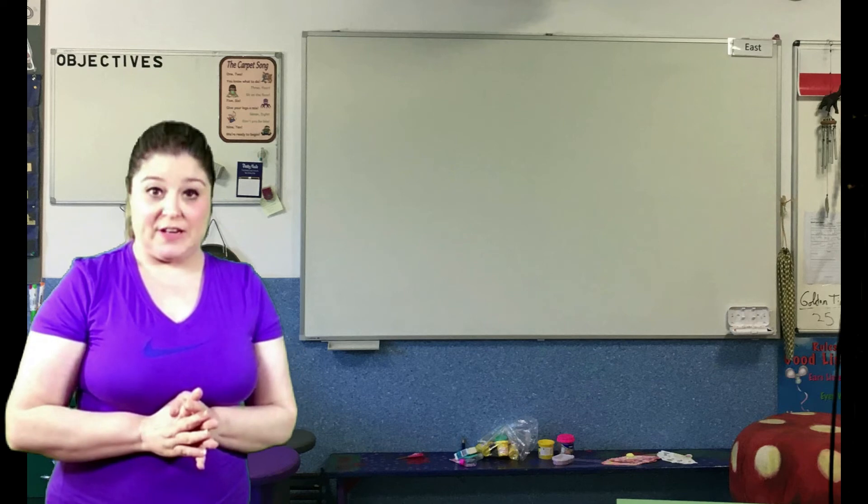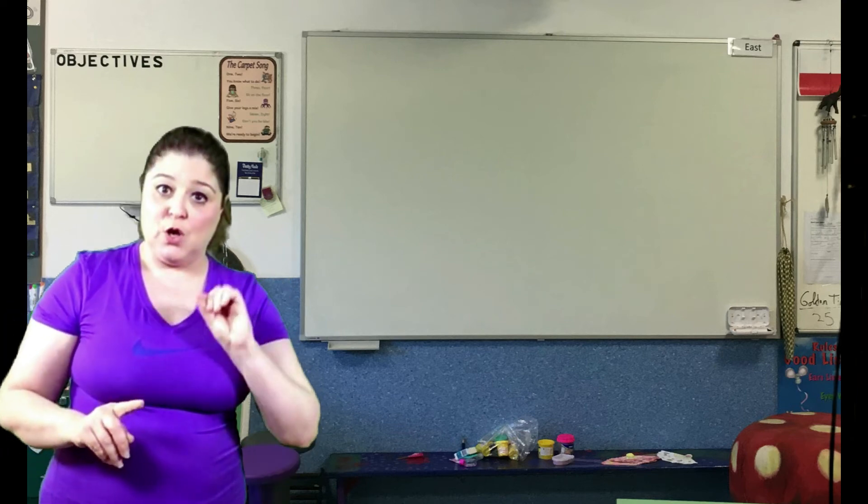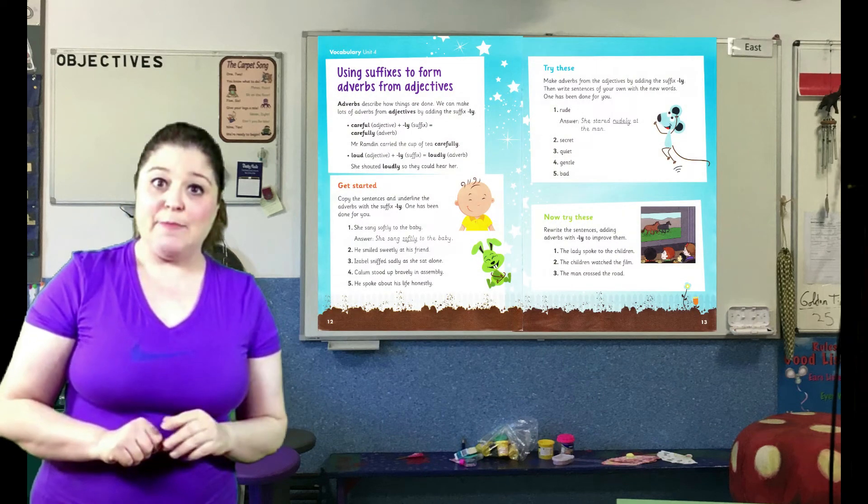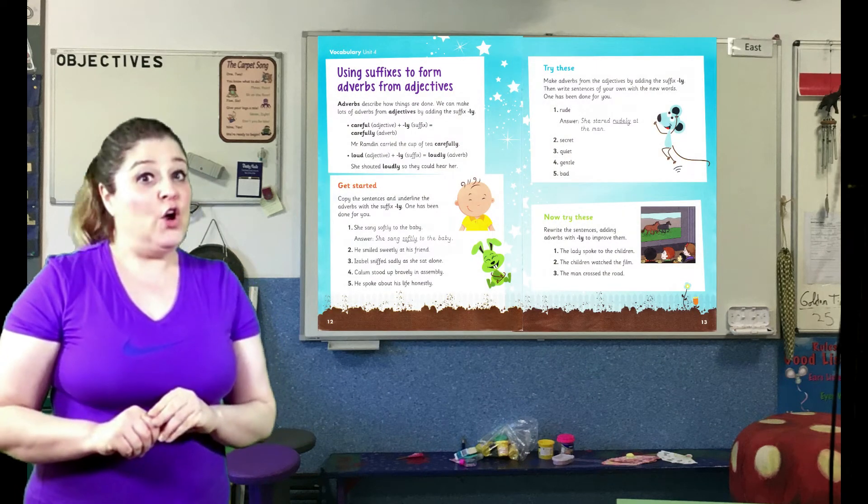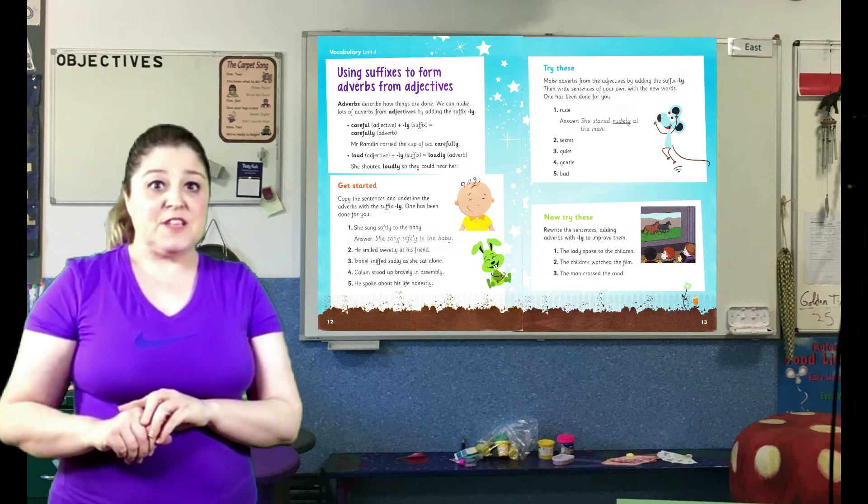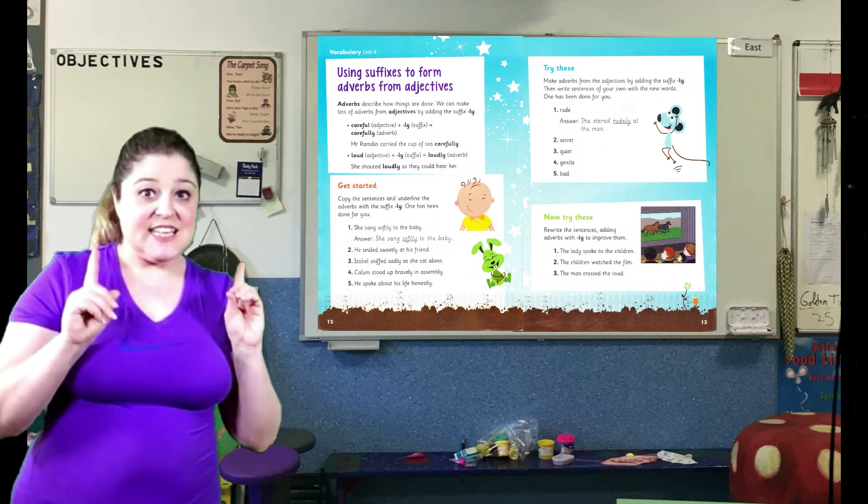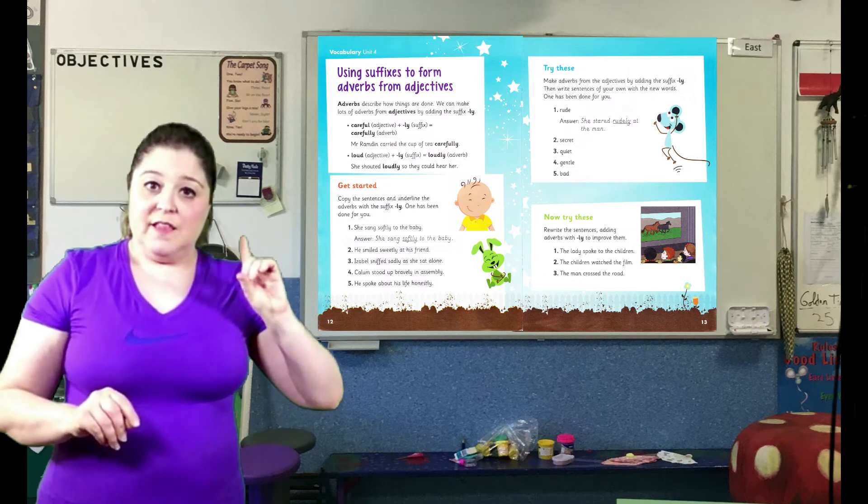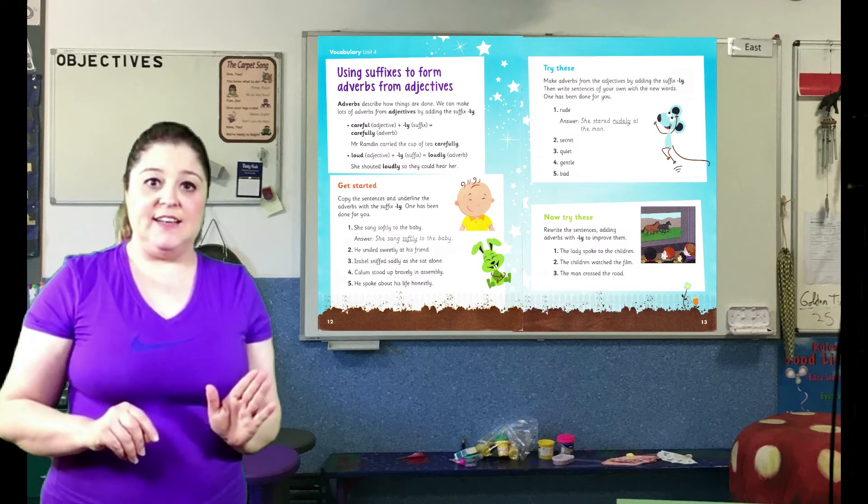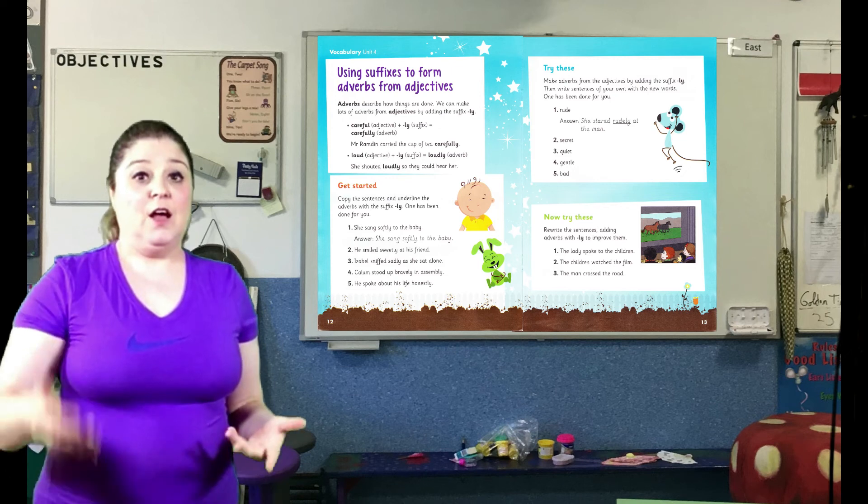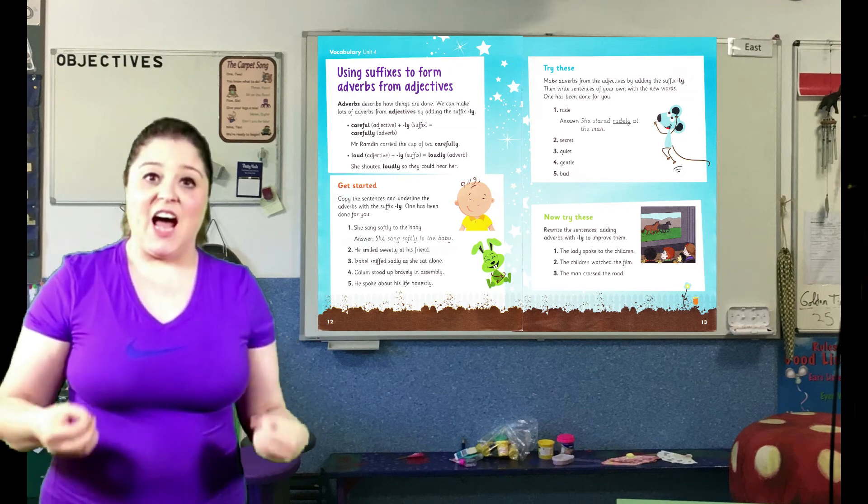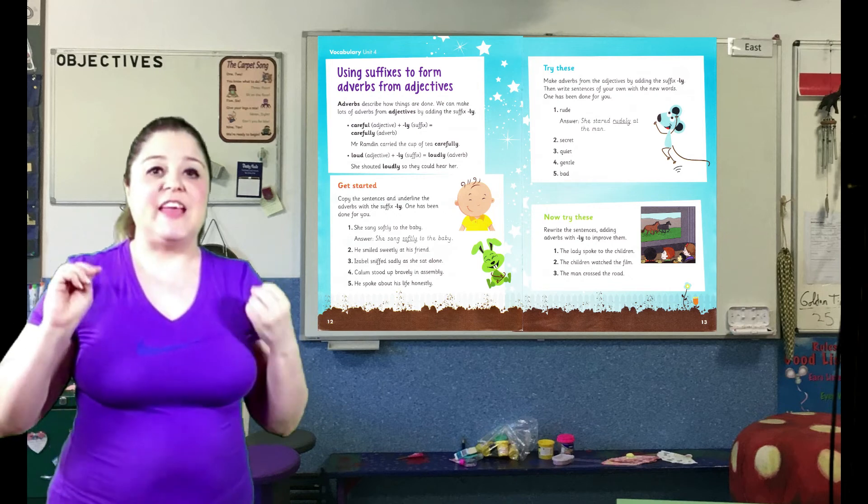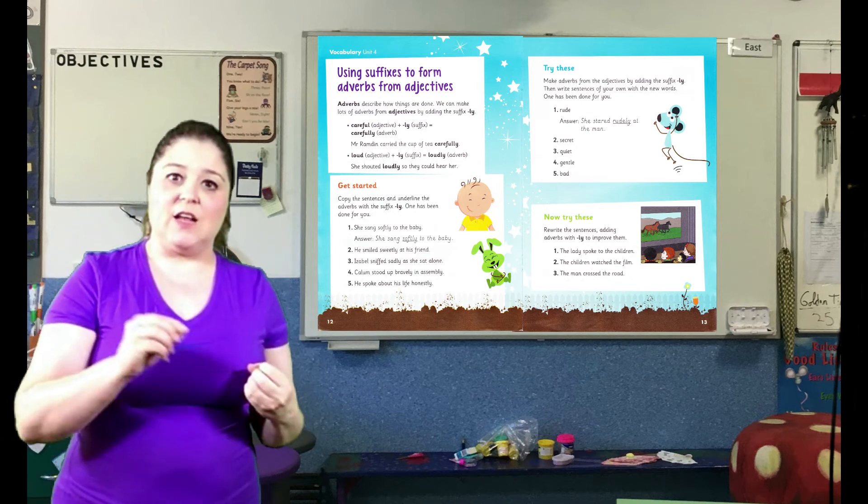Now it's time to do your written work, which will be in your vocabulary, grammar and punctuation book. This work is to be done in your purple copybook. It is vocabulary unit 4. Using suffixes to form adverbs from adjectives. Let's take a look. You need pages 12 and 13. The get started. In the get started, you have sentences. Copy the sentences and underline the adverbs. Remember, the adverbs will have the suffix L-Y.